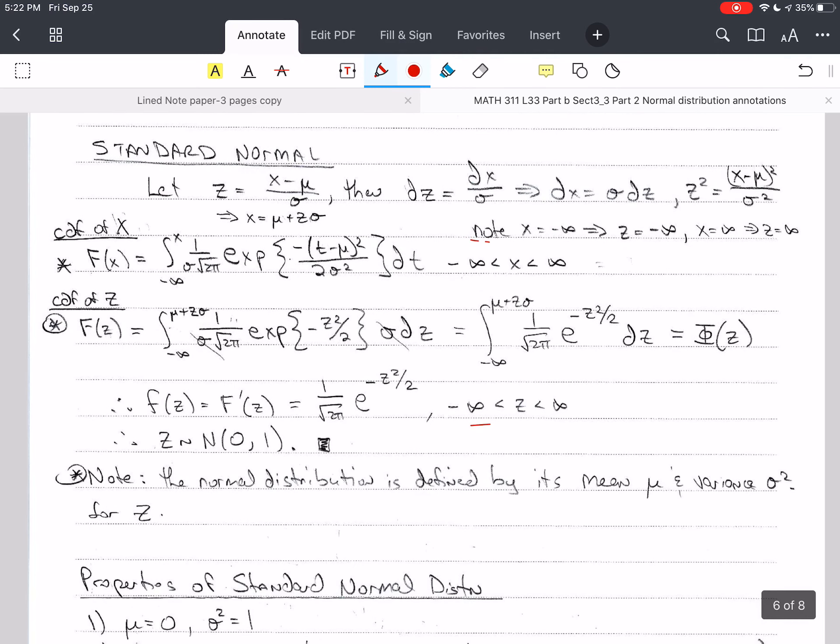Now, let's talk about the standard normal. We're going to make this substitution, this transformation. z is (x minus mu) over sigma. If we take the derivative of that, dz is here, dx we solve for. And notice that z squared is equal to this.